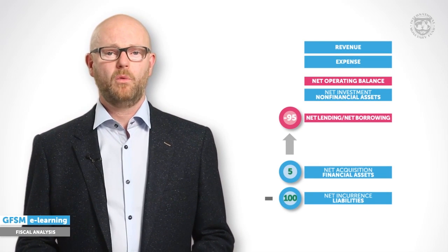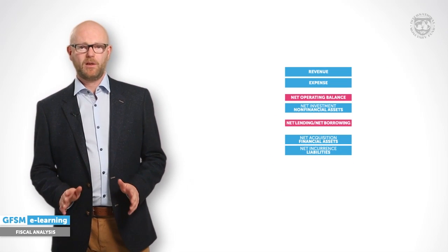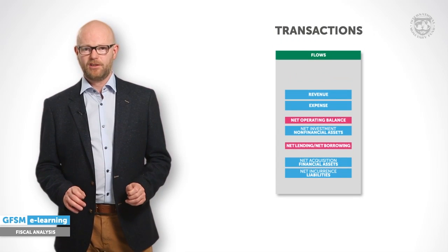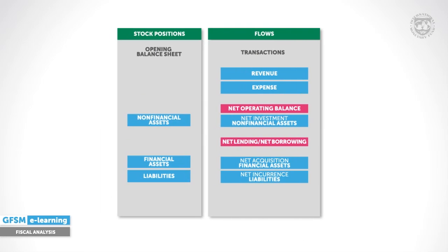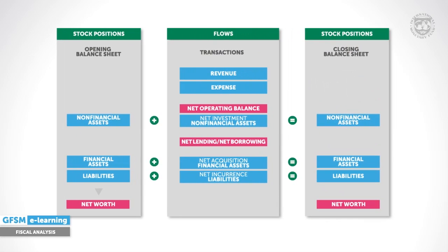Now all events have been captured in a systematic way in the framework. We've recorded all of the flows referred to as transactions in GFSM, and with this information we can do much more. We can integrate stock and flow information. The GFSM is based on a balance sheet approach. From the opening stocks, we can calculate the government's net worth — the value of all assets less liabilities. The recorded transactions will add to those opening values and explain how the stocks change throughout the year.